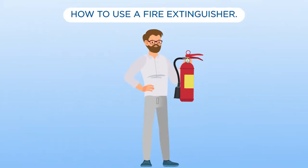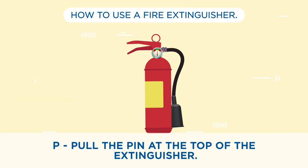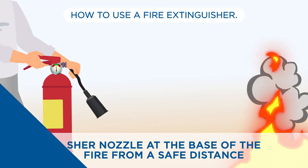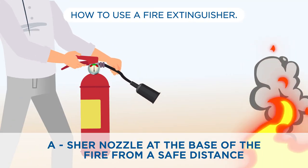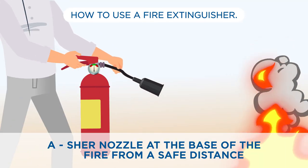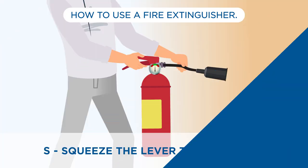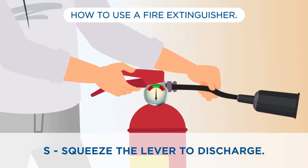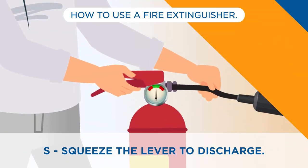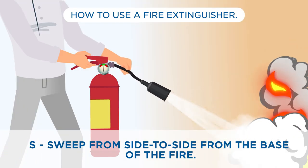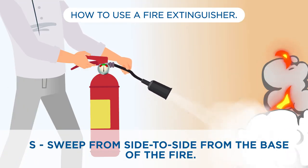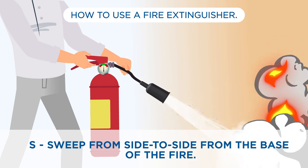To safely operate a fire extinguisher, you should use the PASS method. P: Pull the pin at the top of the extinguisher. A: Aim the extinguisher nozzle at the base of the fire from a safe distance. S: Squeeze the lever to discharge. S: Sweep from side to side from the base of the fire.